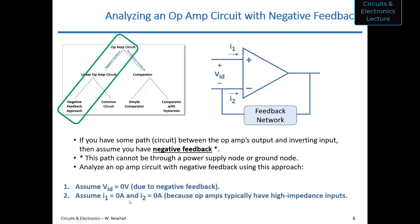Step three in the three-step process: analyze the circuit using KVL, KCL, Ohm's law — whatever you want to throw at it. What we're going to do now is work an example problem on the whiteboard with a circuit that has negative feedback, using these steps: VID equals zero, the currents into the input equals zero, then use KVL, KCL, whatever.